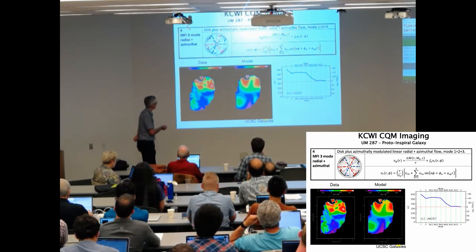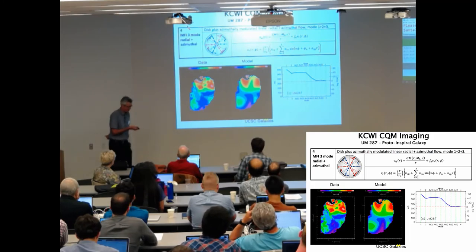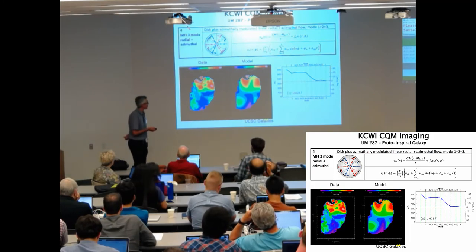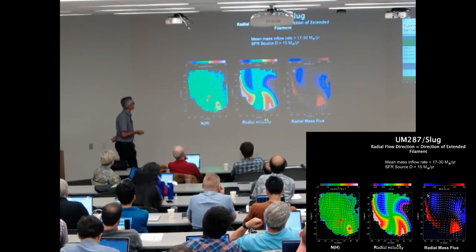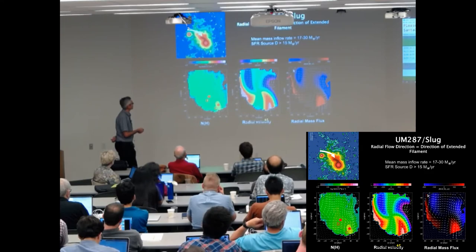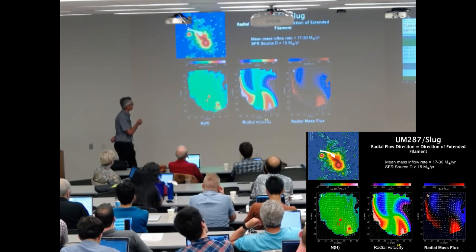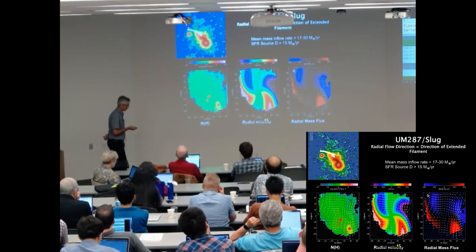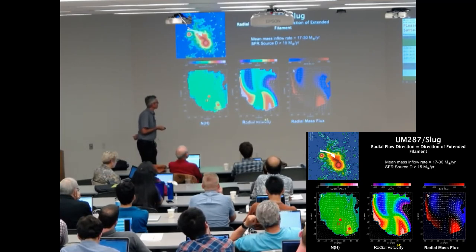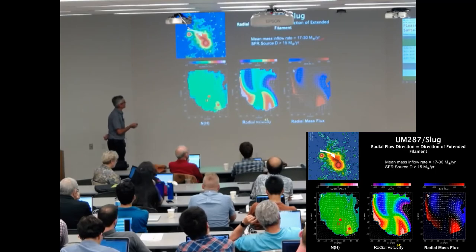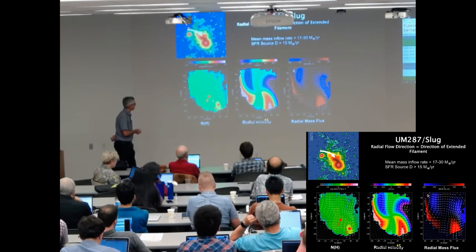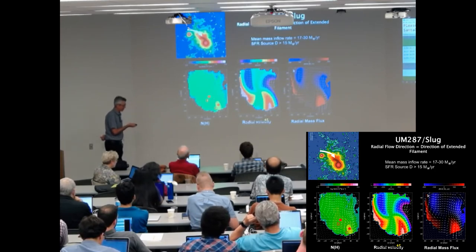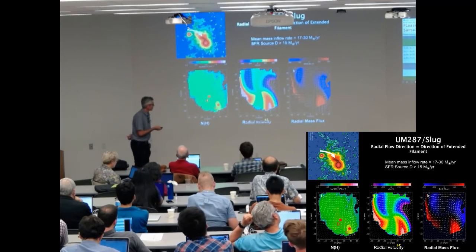And again, you can see where the radial flow is occurring, the inflow. And it corresponds, this is the face on reconstruction. It corresponds to the filament, showing where the flow is coming in. So it looks pretty promising. And the mass inflow rate, again, is comparable to what we think the star formation rate is for this object. We haven't measured directly from H-alpha yet, but that's what we estimated.